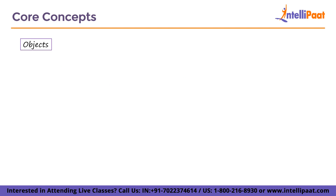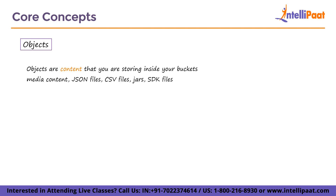The next core concept is objects. Objects are the content you are storing inside your buckets. They can include media content, JSON files, CSV files, JAR files, SDK files which can actually boot up inside the bucket — essentially any type of object depending on your use case. A bucket has a maximum capacity of 5 terabytes, which is pretty huge, and you can have up to 100 buckets within a single AWS account.